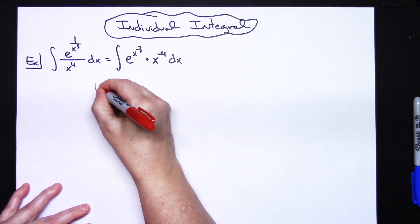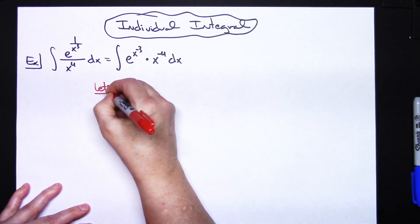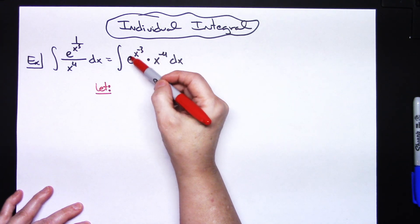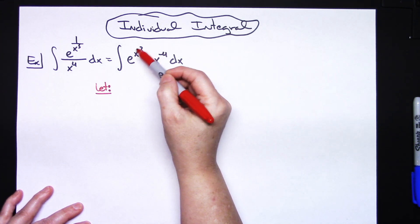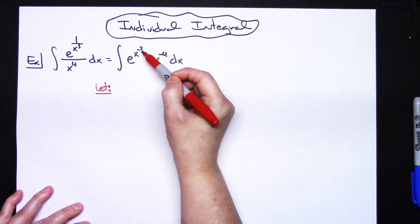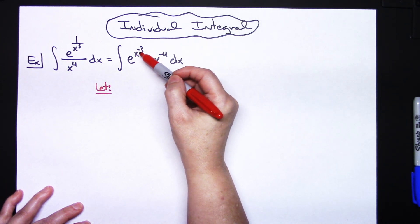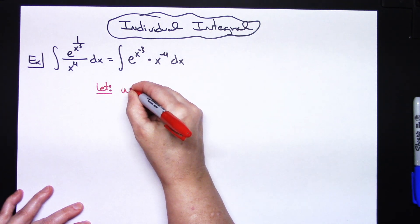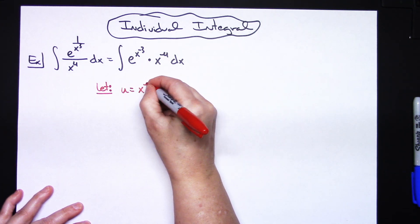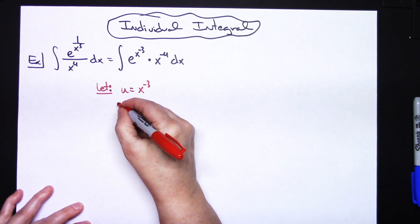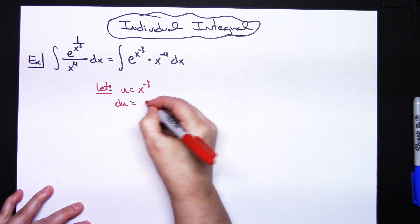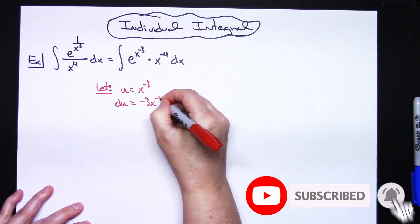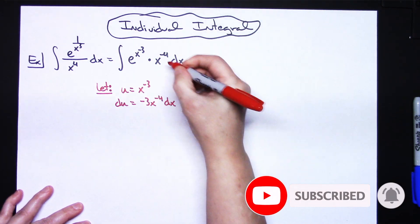Now I've got to pick my u — make a decision for what my u is going to be. If you're thinking ahead, I've got to let it be x to the negative third, because then when I take the derivative I'll have an x to the negative 4. So I'm going to let u equal x raised to the negative third, and then when I take the derivative of both sides I'll have du equals negative 3x to the negative 4 dx.